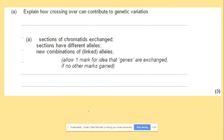Explain how crossing over contributes to genetic variation. Sections of the chromatids will be exchanged, and those sections will have different alleles, producing new combinations of alleles.